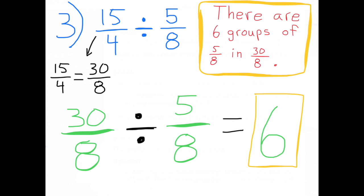To make this easier, I decided to convert the denominator four into an eight, so I'd be dealing with a common denominator of eight. Fifteen-fourths is the same as thirty-eighths. Thirty-eighths divided by five-eighths equals six. There are six groups of five-eighths in thirty-eighths.